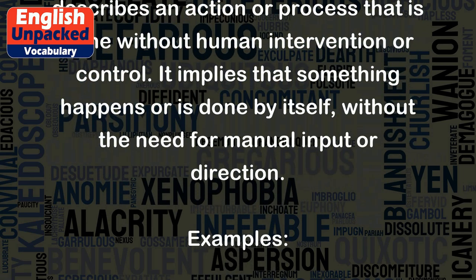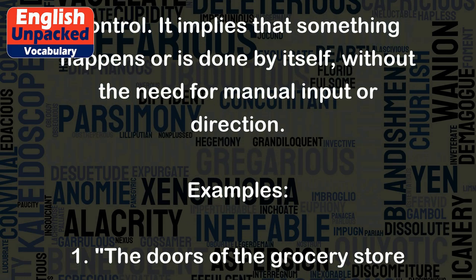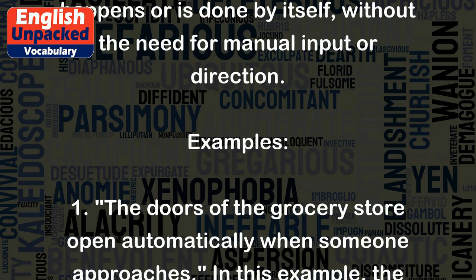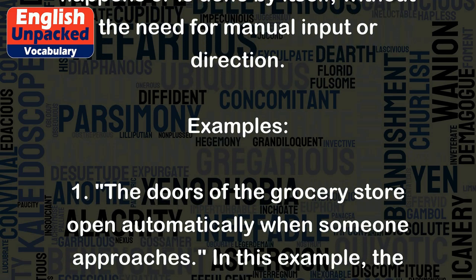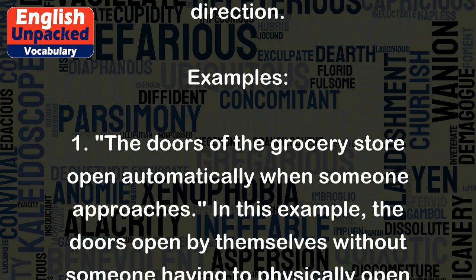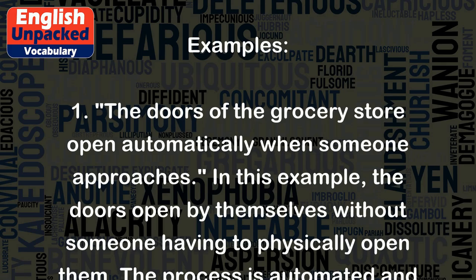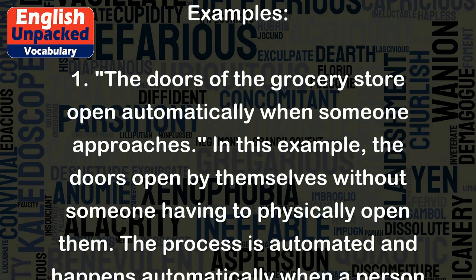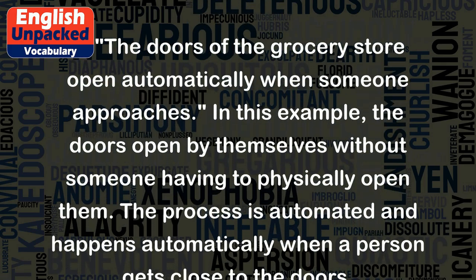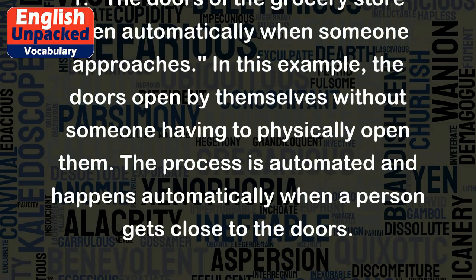Example 1: The doors of the grocery store open automatically when someone approaches. The doors open by themselves without someone having to physically open them. The process is automated and happens automatically when a person gets close to the doors.